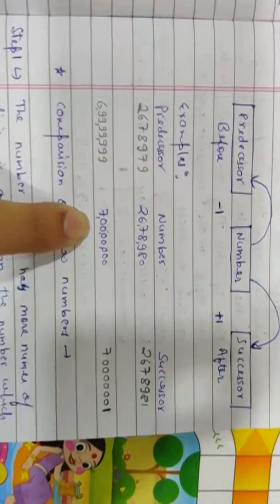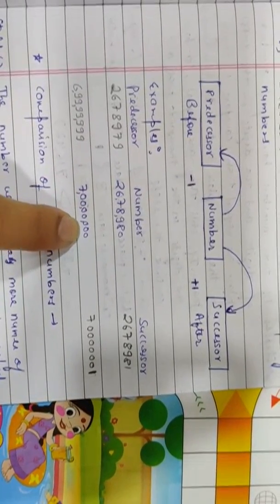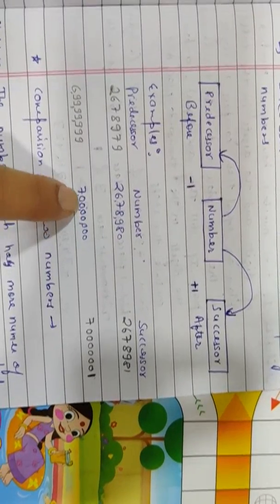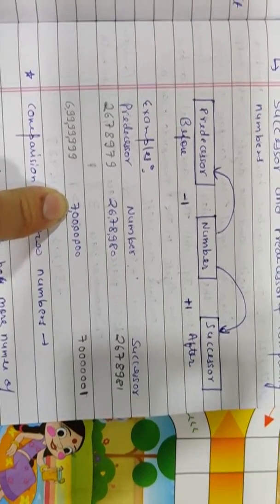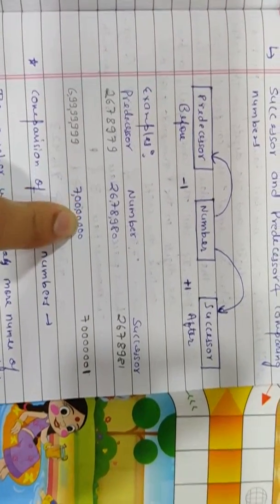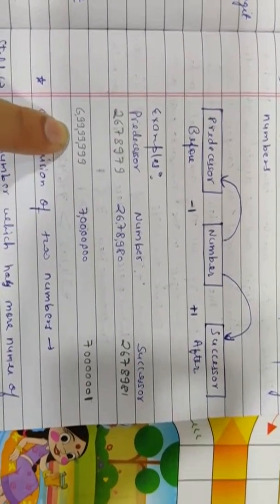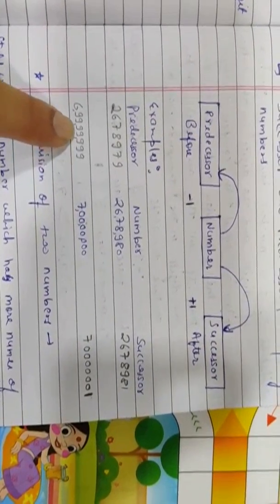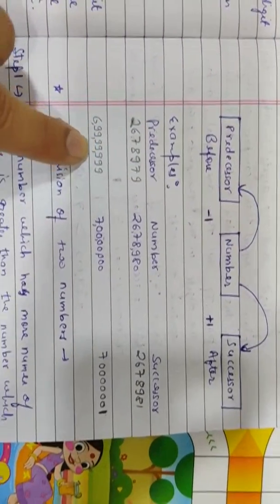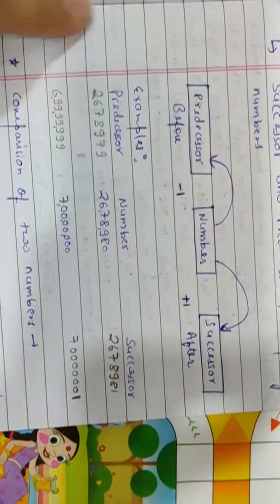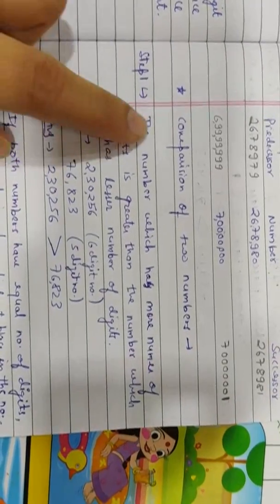We are given 7 crore. So the successor would be plus 1 — that means 7 crore 1. And predecessor means minus 1 — that means 6 crore 99,99,999. It is very easy. Successor and predecessor — now let's talk about comparison of two numbers.